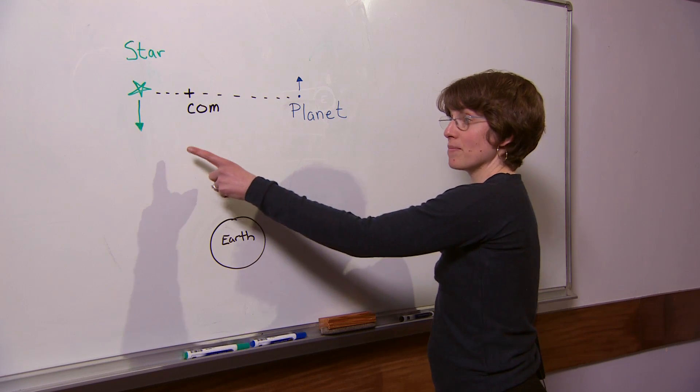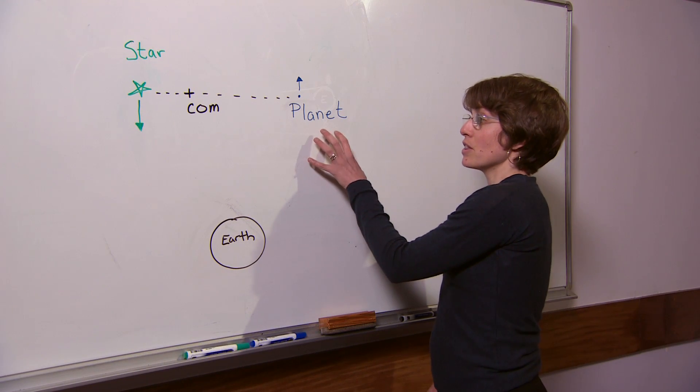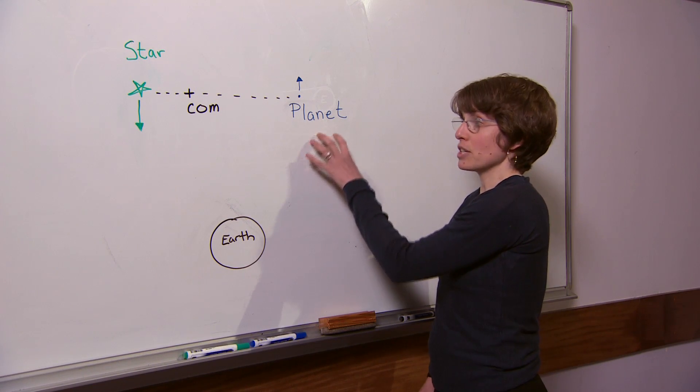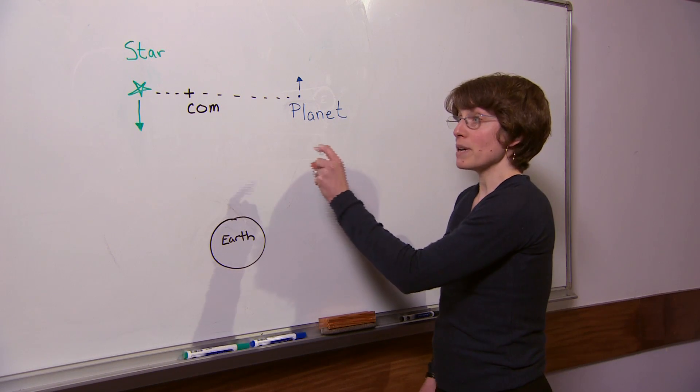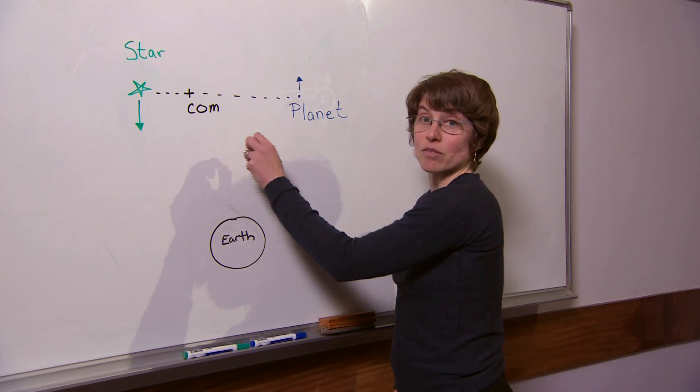So here we have a star and a planet. The planet exerts gravitational influence on the star, causing the star to orbit around a common center of mass.